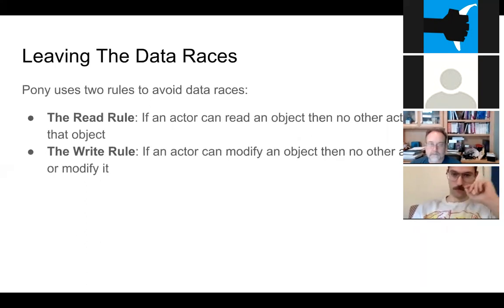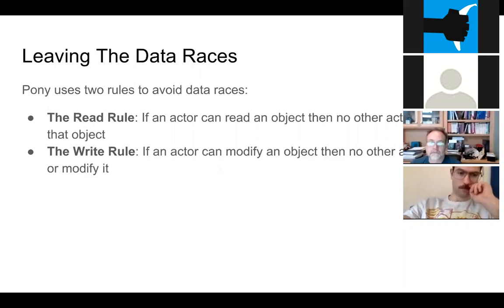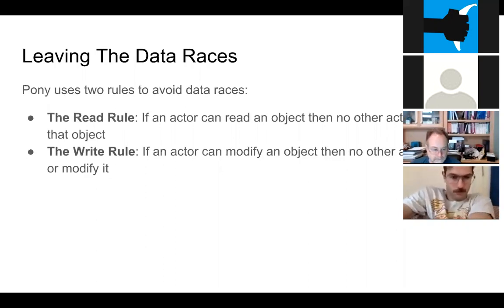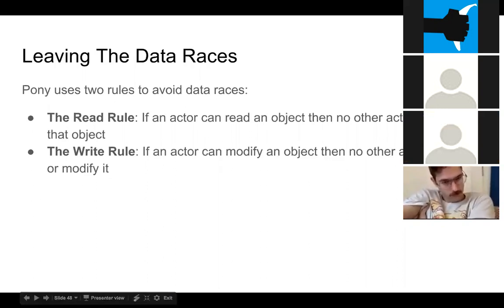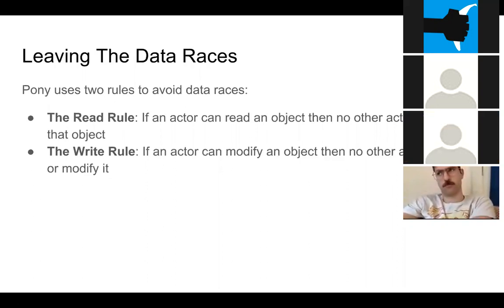Pony has its own way of handling things like that. Pony uses two rules to avoid data races. The first is the read rule: if an actor can read an object, then no other actor can modify that object. The second is the write rule: if an actor can modify an object, then no other actor can read or modify it. These two rules together allow us to avoid data races.